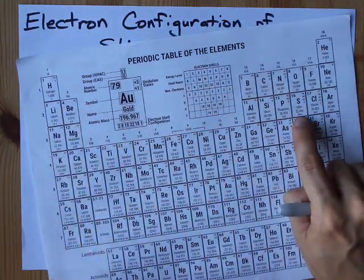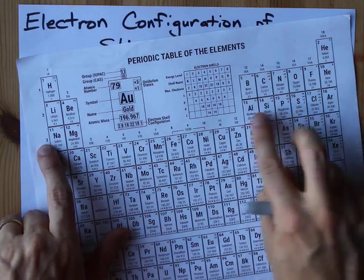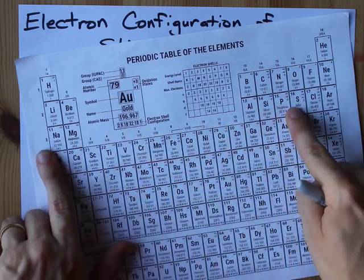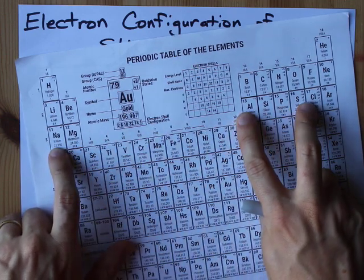I'm going to find sulfur here. It's in the third row of the periodic table, and it's the first, second, third, fourth element in this block. It's actually the sixth element in that row, but it's the fourth one in this little block here.